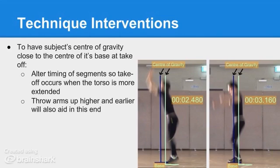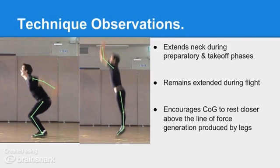Throwing the arms up higher and earlier may also aid in tilting the trunk further in a posterior direction during take-off. A good aspect of technique is that the subject keeps his head and neck extended during the preparation and take-off phases. This results in his centre of gravity being located more directly above his knees, hips, and ankle joints. This is important because it means more of his body mass is located above the direction of the ground reaction force generated when his legs push into the floor. The closer in alignment these two things are, the more that force can act to translate his body mass vertically rather than into other planes, assuming the ground reaction forces are acting perpendicular to the ground.